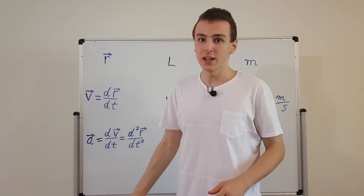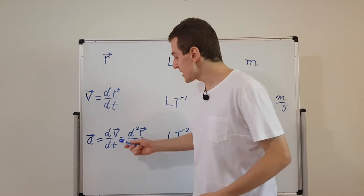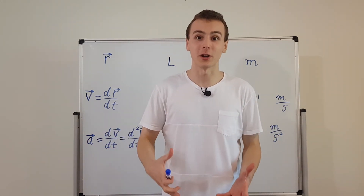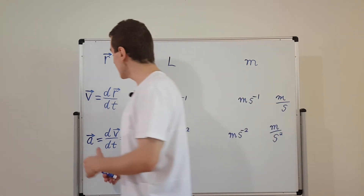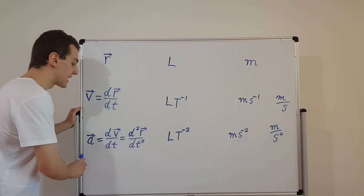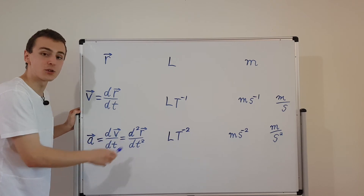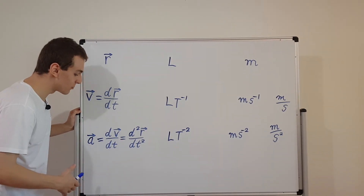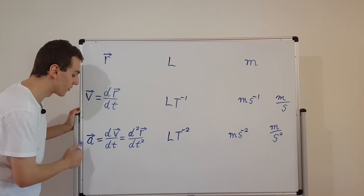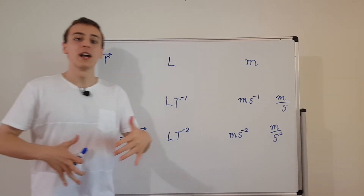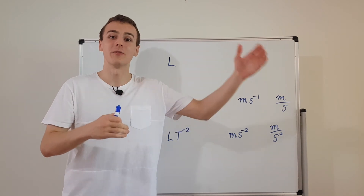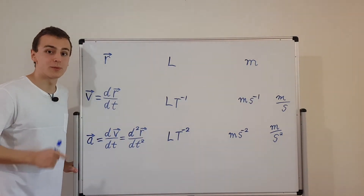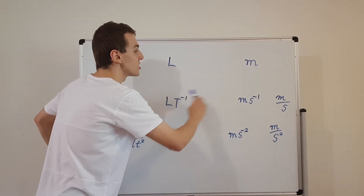Going beyond acceleration is not very useful. If you take the time derivative of acceleration, you get a quantity sometimes called jerk. But jerk is not as useful as acceleration — acceleration shows up in Newton's laws of motion, but jerk doesn't. Jerk is just as easily represented as the time derivative of acceleration, so there's actually no need to assign names to these higher derivatives. This is sufficient.